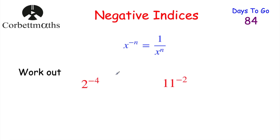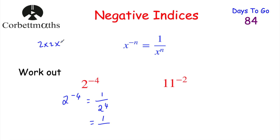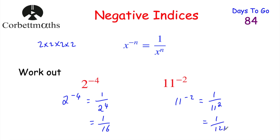Here are questions for you to try: work out 2 to the power of negative 4 and 11 to the power of negative 2. Pause the video and try them now. For 2 to the power of negative 4: write 1 over 2 to the power of 4. 2 × 2 × 2 × 2 = 16, so the answer is 1/16. For 11 to the power of negative 2: 1 over 11 squared = 1/121.